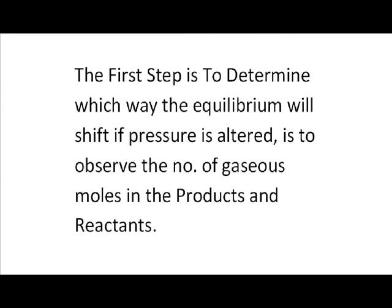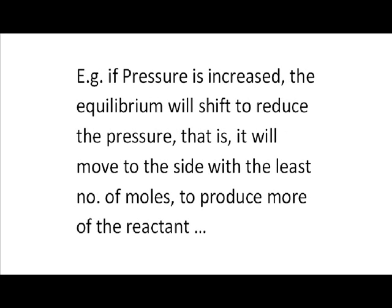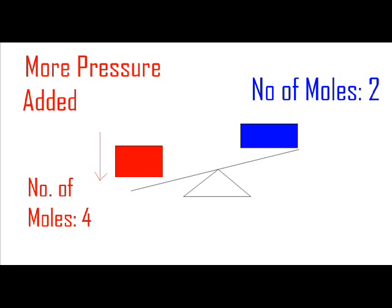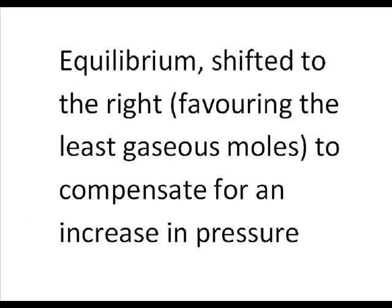The first step in determining which way the equilibrium will shift if pressure is altered is to observe the number of gaseous moles in the products and reactants. For example, if the pressure is increased, the equilibrium will shift to reduce the pressure. That is, it will move to the side with the least number of moles to produce more of the reactant. And vice versa.